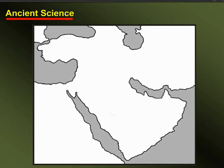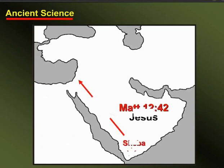Even Jesus used ancient geography in order to communicate as effectively as possible with people in his generation. In other words, Jesus came down to their level so he could be understood. For example, he talks about the Queen of Sheba coming from the ends of the earth to meet Solomon in Jerusalem to learn wisdom from him. And where is Sheba? From their ancient perspective, being near the shoreline, they thought that Sheba was at the ends of the earth. And from their perspective, that made perfect sense.